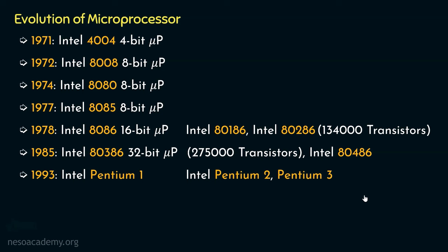The last 32-bit microprocessor of Intel — the Intel Pentium 4 — was launched in the year 2000 with more than 42 million transistors on a single chip. Starting from Intel 80386 through Pentium 4, all of these had a CPU word length of 32-bit. Pentium 4 enabled users to create professional quality movies, communicate using real-time video and voice, render 3D graphics in real-time, and simultaneously run several multimedia applications while connected to the internet.